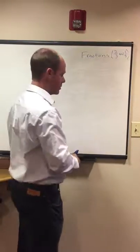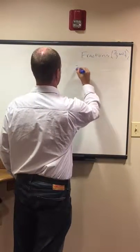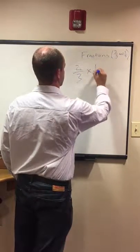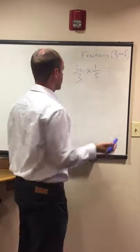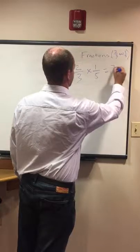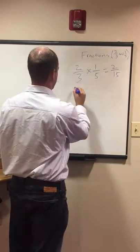What if we were going to multiply these? We have 2/3 times 1/5. This is probably the most straightforward one. We don't find a common denominator or anything. You can just go ahead and multiply them out, and you will get 2/15 for that one.